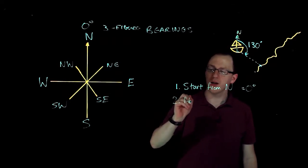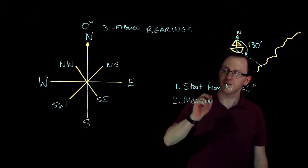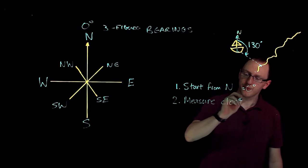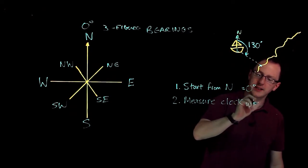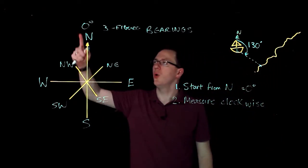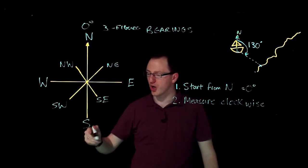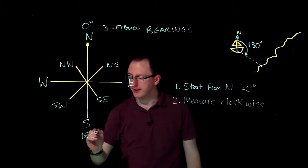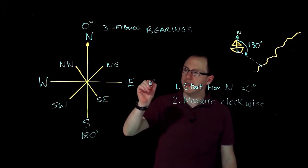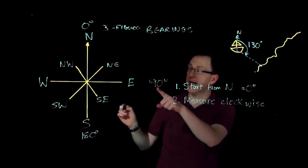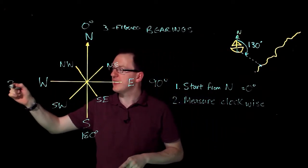Measure in a clockwise direction. So I'm always going this way. So south would be 180 degrees, and east would be 90 degrees. I'm going to come back to that in a second. West would be 270 degrees.